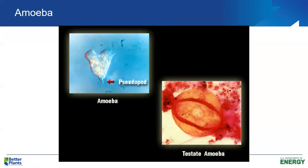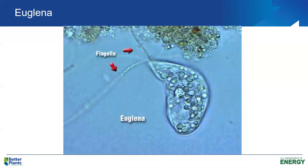Amoeba are another type of protozoan seen in activated sludge — they have irregular finger-like projections or false feet and can also use a slime layer to move about in the floc to obtain food. Testate amoeba form a test or shell around themselves for protection against predators. Euglena also have hair-like flagella that they whip around to move and find food in the mixed liquor.